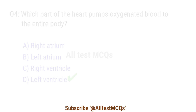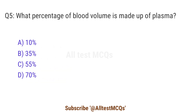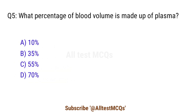Question 5. What percentage of blood volume is made of plasma? The correct answer is option C. 55%.